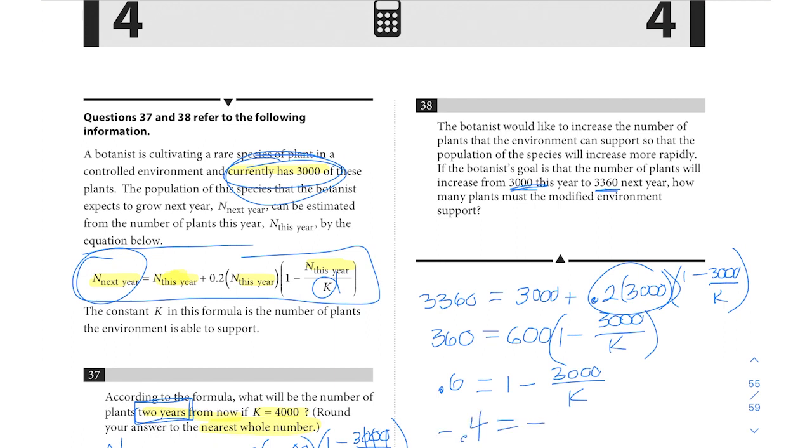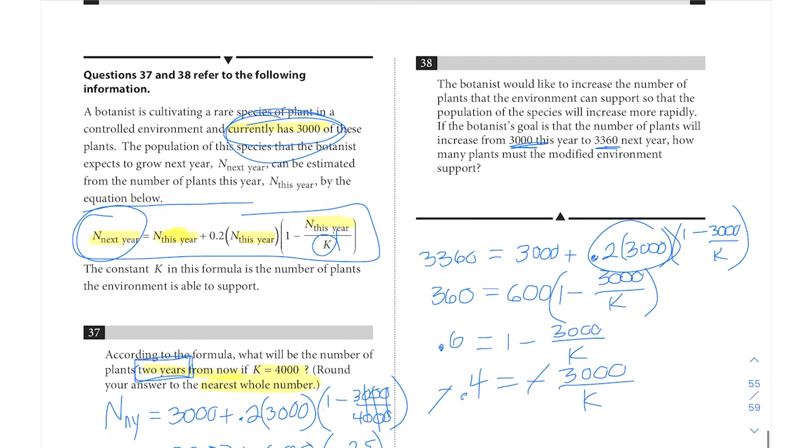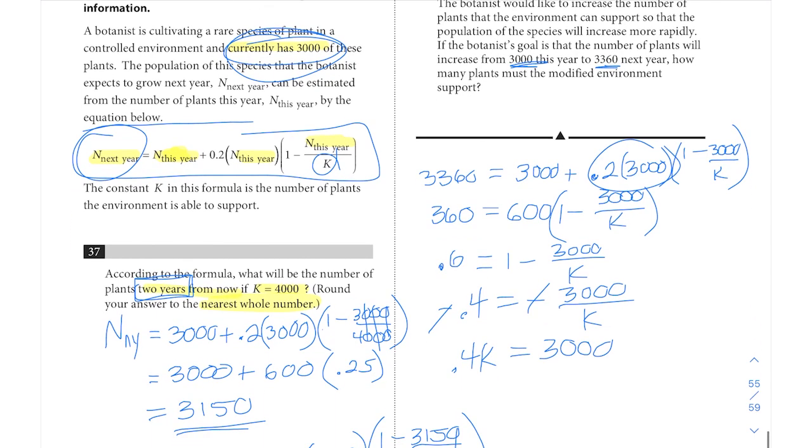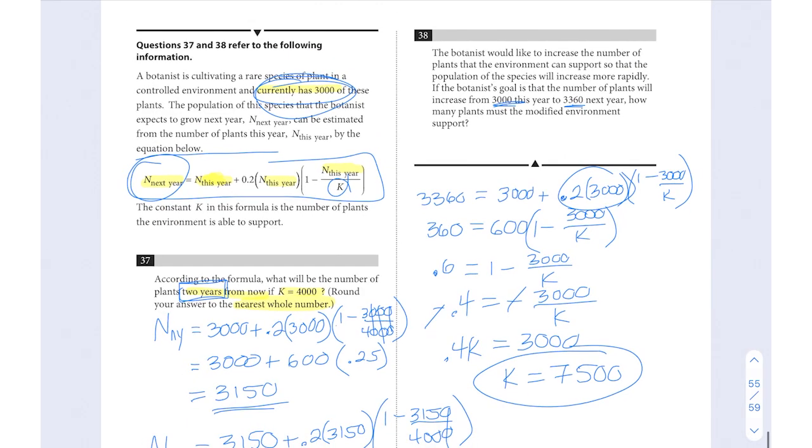Subtract 1. That will give us negative 0.4 equals negative 3,000 over K. Those negatives will cancel. And to isolate K, we multiply both sides by K. We get 0.4K equals 3,000. And when we divide for our final answer, we'll get 3,000 divided by 0.4, which will give us 7,500 for the value of K for question 38.